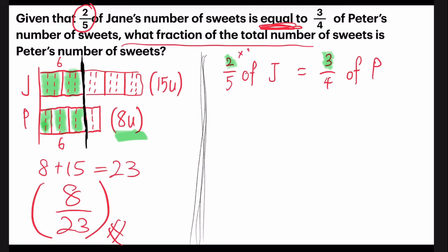Which is why I will multiply this by three. And for Peter, I have to multiply by two. So my new fraction will be six out of 15 of Jane. It's equal to six out of eight of Peter.